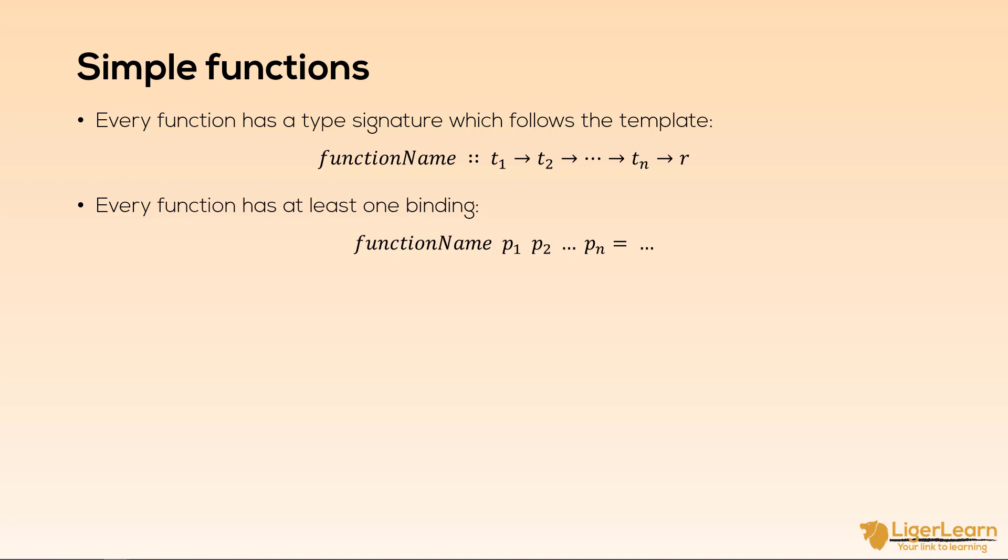The parameter names come after the function name and are only separated by a single space being between them. This is known as juxtaposition. Let's now take a look at an actual example.